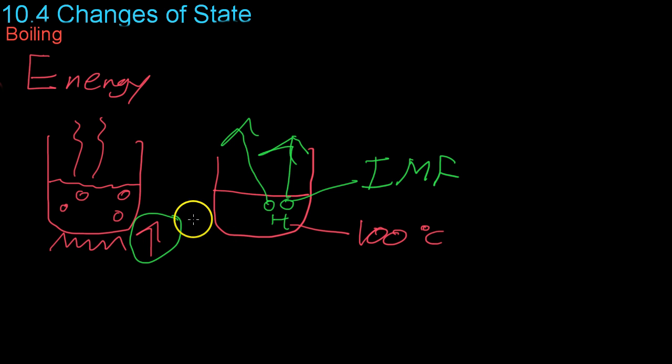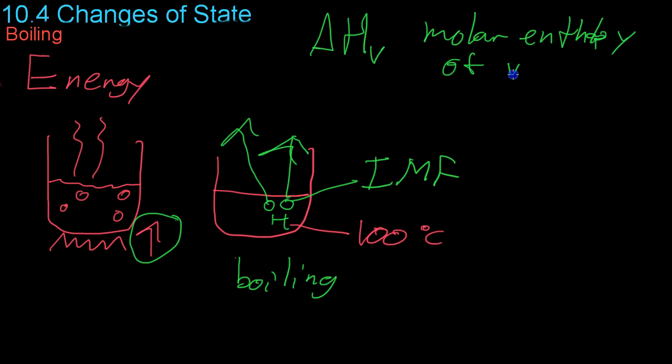Now, it turns out this added heat that we use to transform a liquid into a gas at its boiling point is sort of a constant number. And this constant number is represented by change in heat with respect to velocity, and it's known as the molar enthalpy of vaporization.